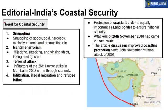Now we need to talk about coastal security — why do we need strong coastal security? First, all kinds of smuggling activities such as gold, narcotics, and explosives are mostly smuggled through coastal areas, so we need surveillance there. Second, maritime terrorism — activities in the ocean such as hijacking, attacking, and sinking of ships, and pirates like the Somali pirates who are active in the Indian Ocean and Arabian Sea region.